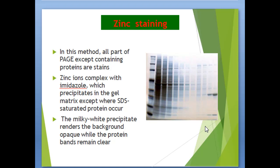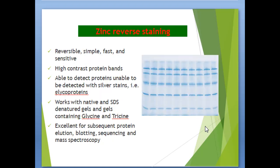Another method is zinc staining. In this method, all parts of the PAGE gel except the parts containing proteins form a zinc ion complex with imidazole, which precipitates in the gel matrix except where SDS-saturated protein occurs. The milky white precipitate renders the background opaque while the protein bands remain clear. Zinc reverse staining is reversible, simple, fast, and sensitive, providing high-contrast protein bands. It is able to detect proteins that cannot be detected with silver staining, such as glycoproteins, and works with native and SDS-denatured gels, as well as gels containing glycine and tricine. It is excellent for subsequent protein elution, blotting, sequencing, and mass spectrometry.